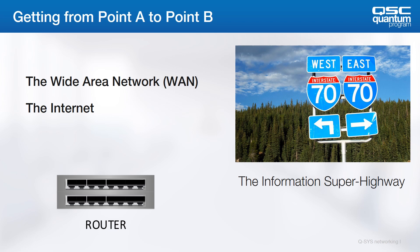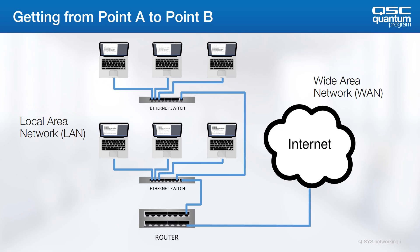That's essentially how we connect our different cities together. Looking at a similar network diagram, our city would be our local area network of different devices connected via switches. And then we use a router to connect to the cloud, out to the Internet at large.